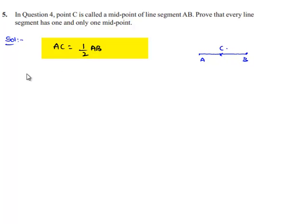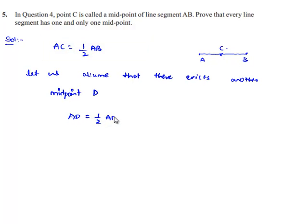Now, let us assume that there exists another midpoint D, then we get AD is equal to half AB, from the above concept.